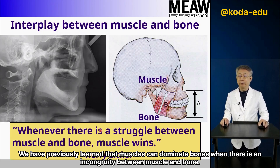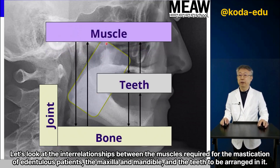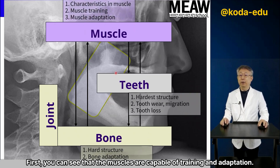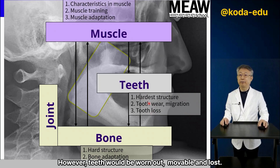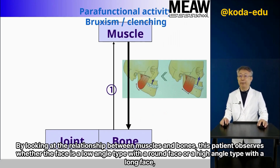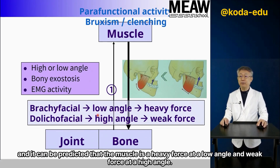We have previously learned that muscles can dominate bones when there is an incongruity between muscle and bone. Let's look at the interrelationships between the muscles required for mastication of edentulous patients, the maxilla and mandible, and the teeth to be arranged in them. You can see that muscles are capable of training and adaptation. Bones are hard tissue, and teeth are also harder than bones; however, teeth can be worn out, become mobile, and lost. By looking at the relationship between muscles and bones, we observe whether the face is a low-angle type with a round face or a high-angle type with a long face. It can be predicted that muscle force is heavy at a low angle and weak at a high angle.